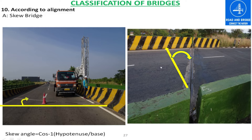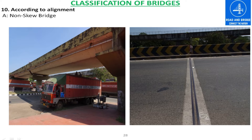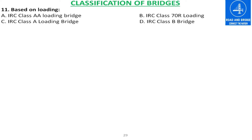Based on loading, the bridge can be classified into four categories: IRC Class A loading bridge, IRC Class AA loading bridge, IRC Class B loading bridge, and IRC 70R loading bridge. No examples are available here because it is not certain which type of loading combination is used during the design.